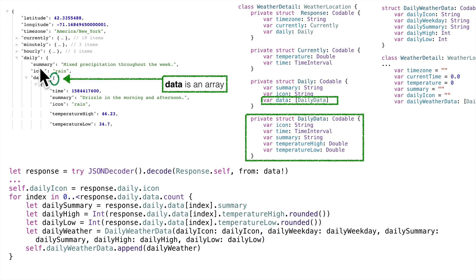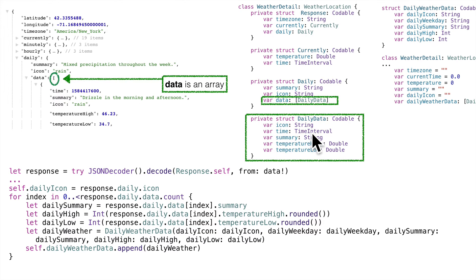We're going to want to go inside of daily, get the array data, and filter out time, icon, summary, temperature high, and temperature low. This slide shows JSON on the left and our weather detail data structures on the right. We created a structure called Response as our blueprint. It's important that all variables in our structs have the exact same name as the key values in JSON — that's why timezone is all lowercase for both the variable name and the JSON key. We also get two values inside of currently, so we created a Currently data structure with temperature and time, and a Daily data structure with summary and icon.